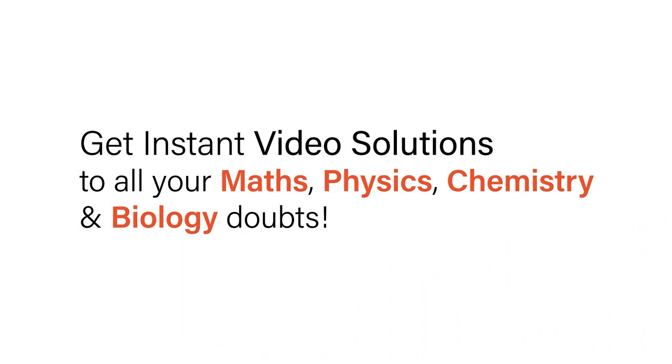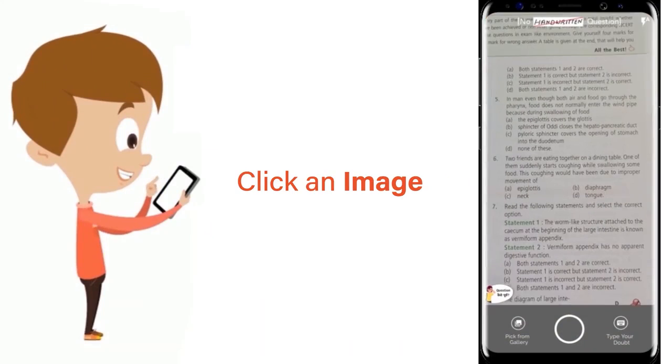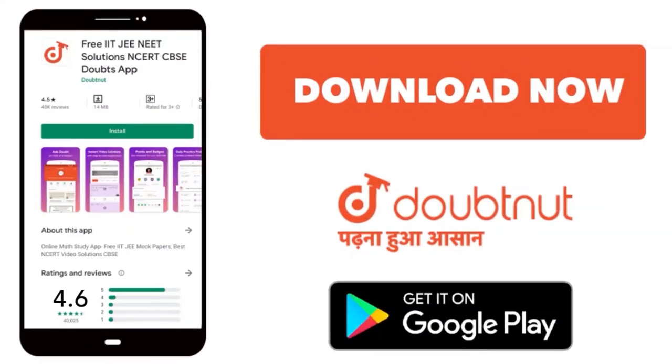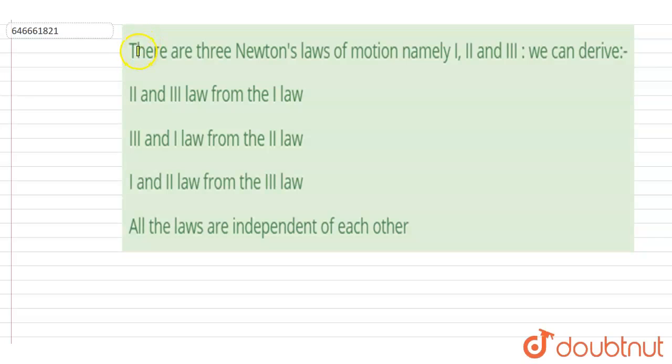With Doubtnet, get instant video solutions to all your maths, physics, chemistry, and biology doubts. Just click the image of the question, crop the question, and get instant video solution. Download Doubtnet app today. Hello everyone, there are three Newton's laws of motion, namely one, two, and three.